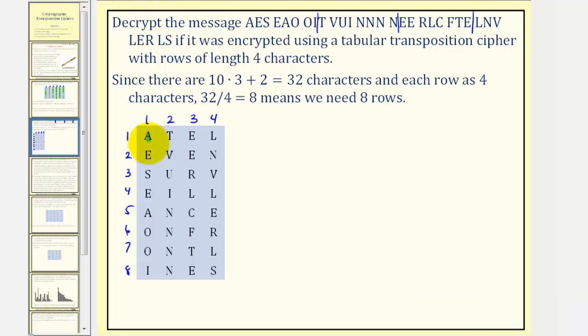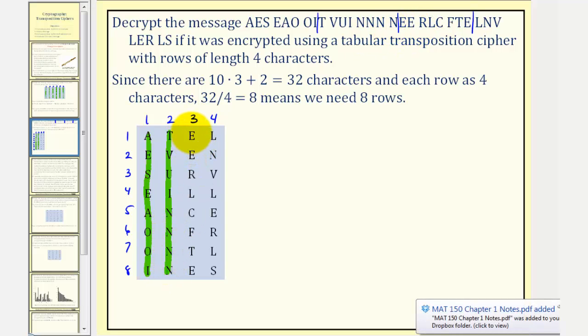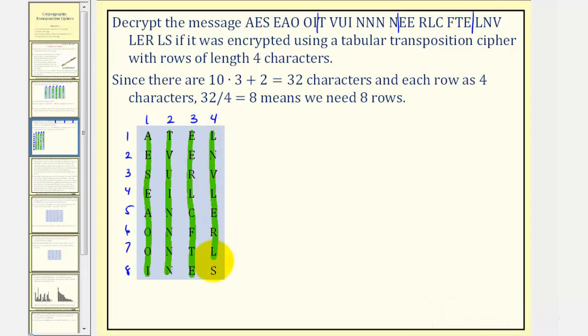Here we have AES, EAO, OI. Here we have TV, UI, NN, NN, followed by EE, RLC, FTE, and finally LNV, LER, LS.